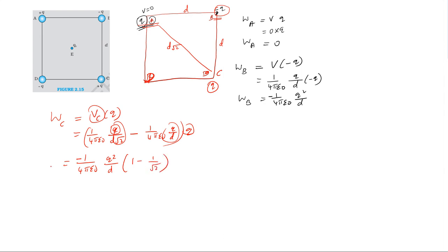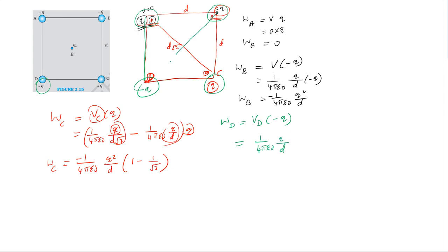To bring the charge minus Q from infinity to point D, work done equals potential at D into charge minus Q. The potential at D includes contributions from charges at A, B, and C. The distance from B to D is the diagonal d√2, and from A and C to D is side d. So potential at D is calculated using these distances.